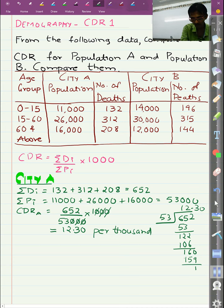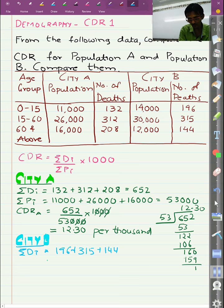Similarly, for City B, the total deaths will be 196 plus 315 plus 144 that would be nothing but 655.